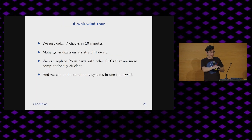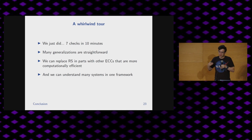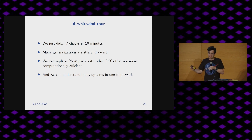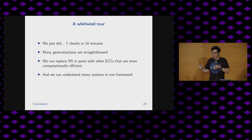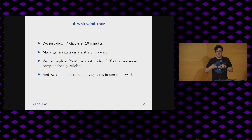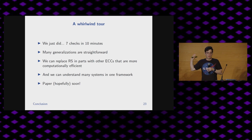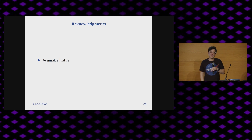We just did seven checks in a little bit over ten minutes. Many generalizations here, but the point is all of these things are kind of straightforward — you write down the math and everything looks exactly identical, doing the same thing over and over in exactly one framework. We can replace Reed-Solomon codes with general linear codes and don't really lose anything. There may be codes that are more or less computationally efficient for certain parts of proofs. The paper will hopefully come soon, with high-probability promises. Thank you for listening, and thank you to Aki for some interesting conversations.